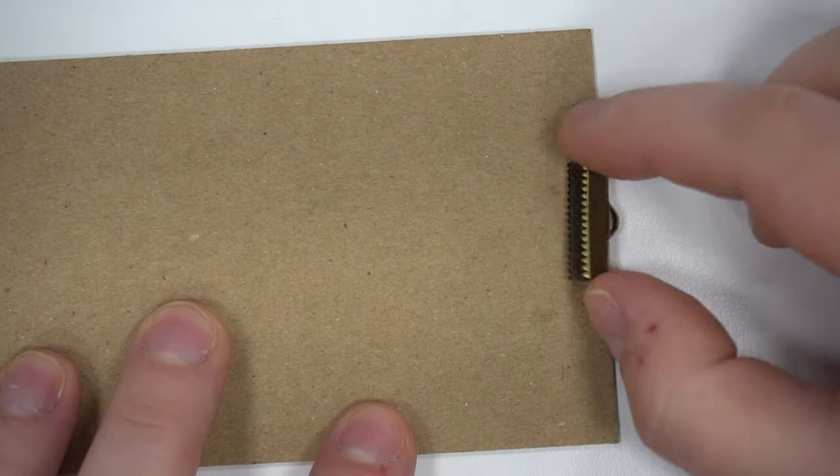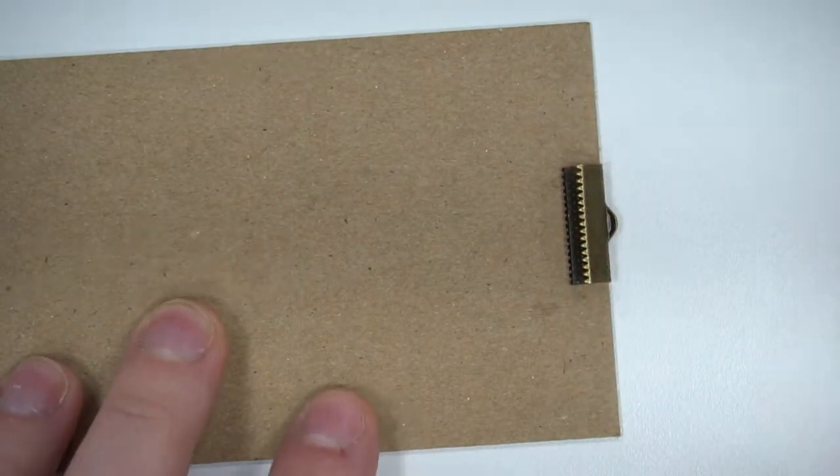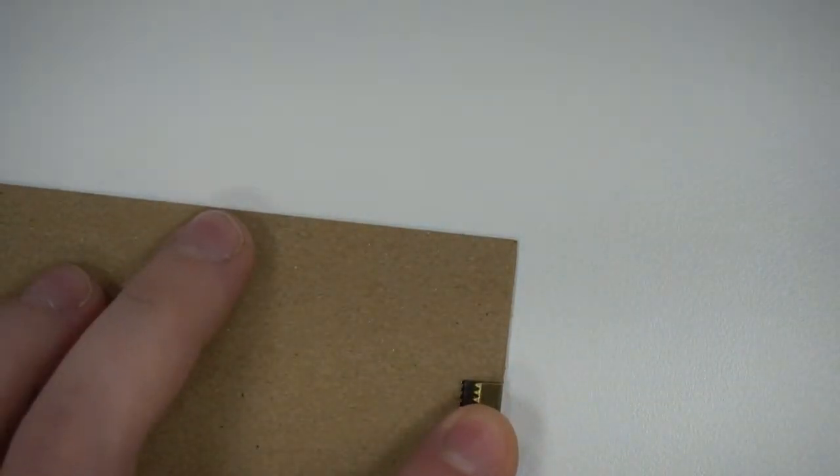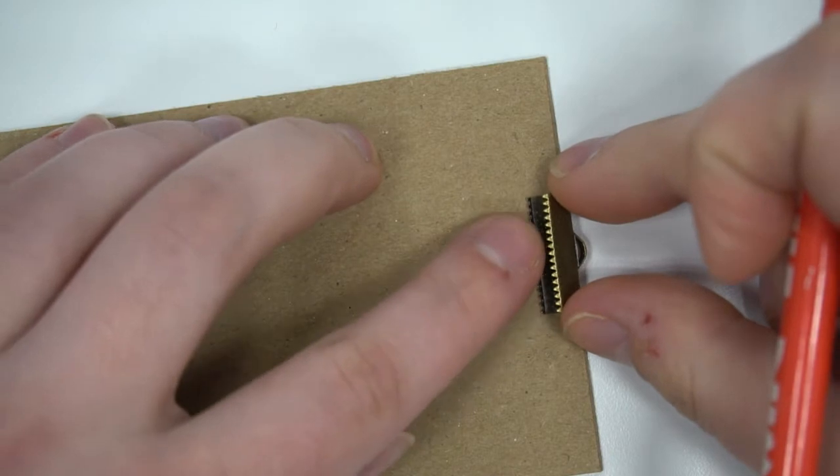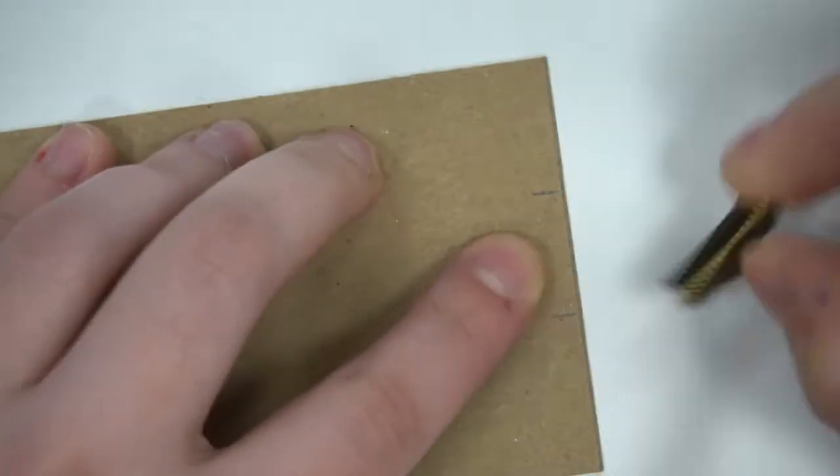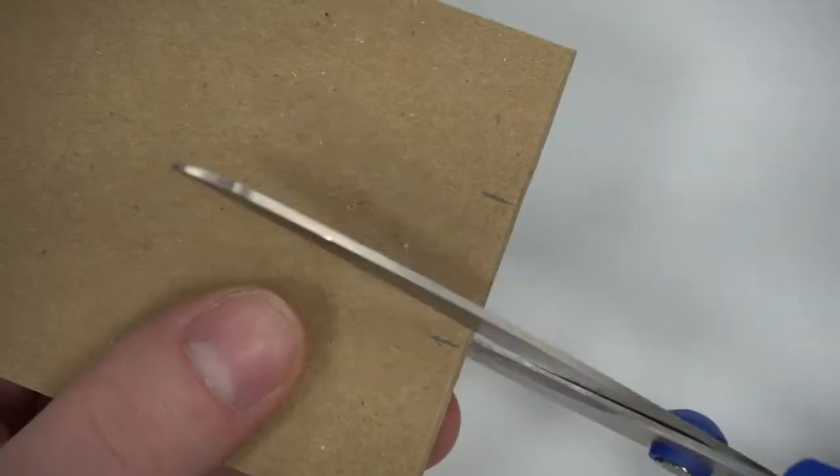To start we are going to put our ribbon end clamp on one end of the chipboard here on the short end. Center it as best as you can, just eyeball it, take a pencil and mark on either side. We are going to cut this loom ourself out of the chipboard and that's going to tell us about how wide we need our fabric to be.